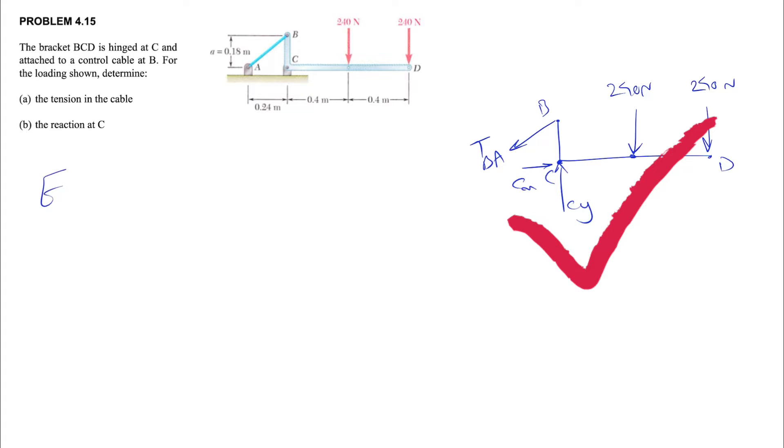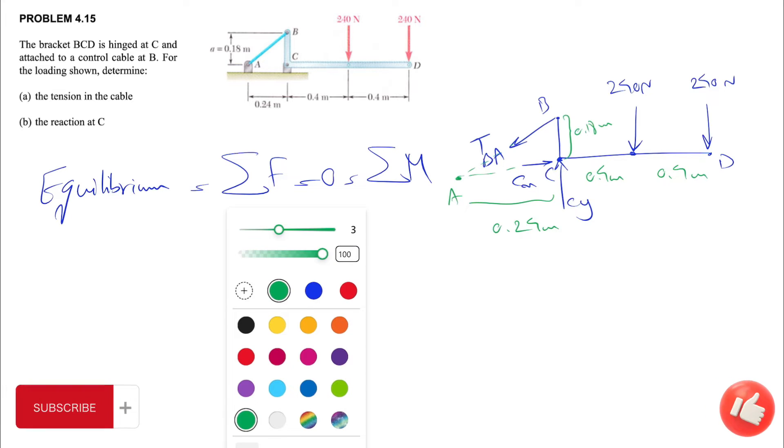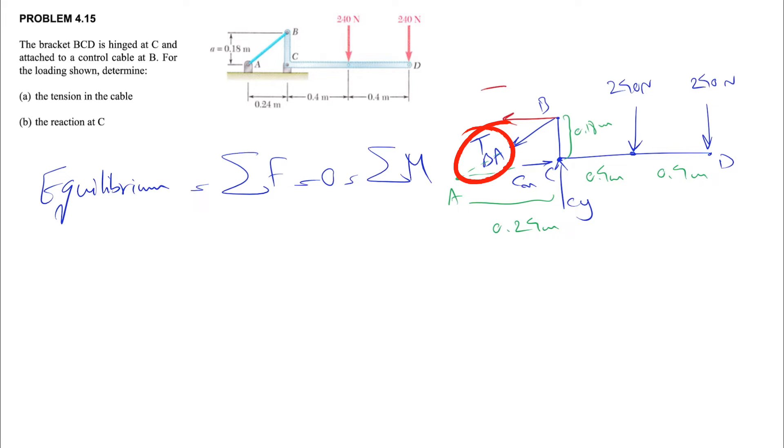That's pretty much what we have for the free body diagram. What we need to do is go with our equilibrium equations. I'm going to show the distances in this question. Now we're going to start with our equation. If we look at the TBA we can solve this to X component, let's call it Tx, and this will be our Ty.